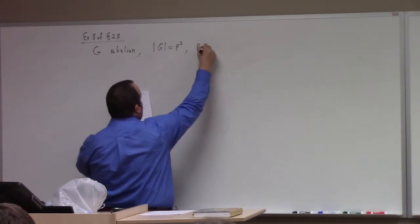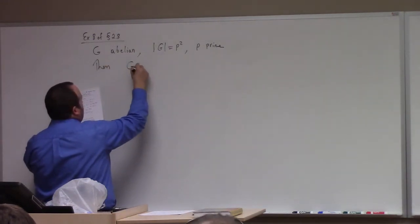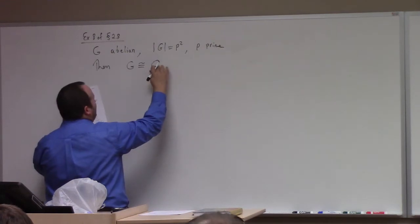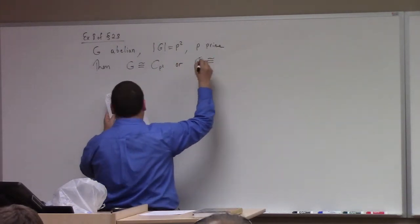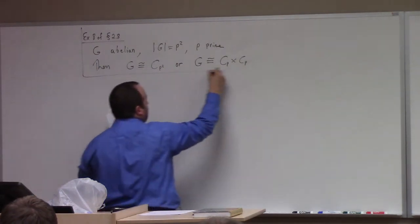All right, so let me get right into it. This is example 8 from section 2.8. Here's the claim: G abelian, and the order of G equal to p squared, where p is prime. Then here's the punchline: G is either isomorphic to the cyclic group Cp squared, or your group is isomorphic to the direct product of Cp and Cp. So it's either a cyclic group, or it's the direct product of cyclic groups of order p and p.